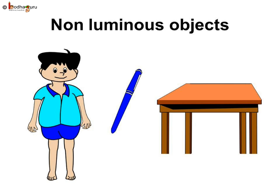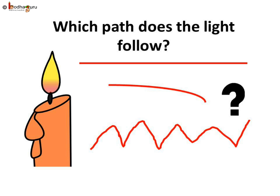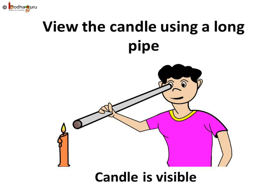We see various non-luminous objects like a table or a pen when the light from a luminous object such as the sun or a torch falls on these and then travels towards our eyes. Have you ever thought what path does the light follow? Is it a straight or curved or zig-zag path? Let us find it out.